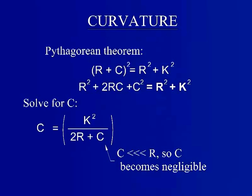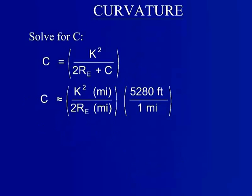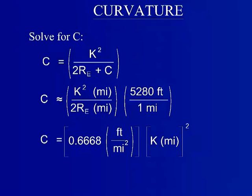It is important to keep track of units. c is reported in feet, while r and k are usually given in miles. The radius of the Earth is considered a constant for this equation. This reveals that c is squarely proportional to the horizontal distance, k.